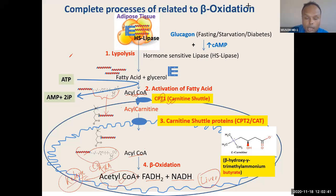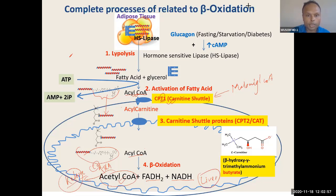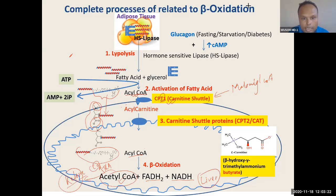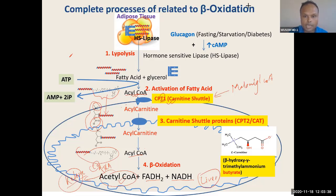CPT1 is inhibited by malonyl-CoA, so this transportation is the rate-limiting step. Now acylcarnitine can be transported through the inner mitochondrial membrane. Carnitine is butyric acid — it has one acid group and one quaternary amine, making it a very soluble compound. Therefore it can be transported through a specific protein from the intermembranous space to the mitochondrial matrix. This translocation is done by an enzyme called translocase.